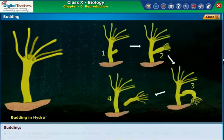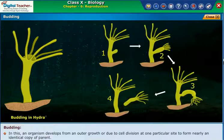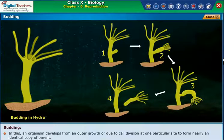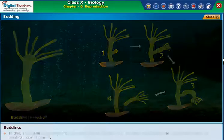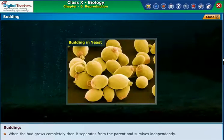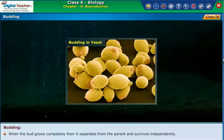In budding, an organism develops from an outer growth or due to cell division at one particular site, to form a nearly identical copy of the parent. When the bud grows completely, it separates from the parent and survives independently.